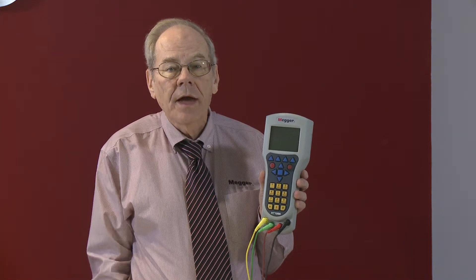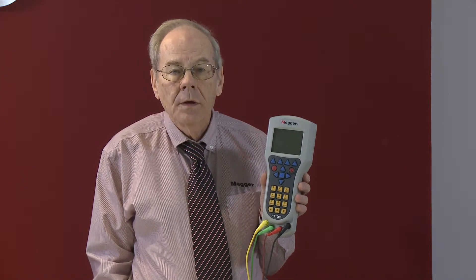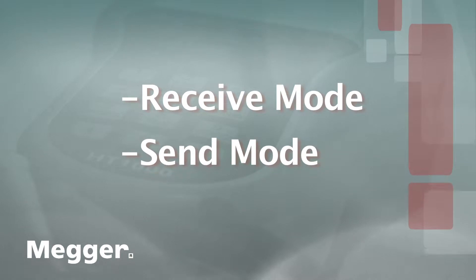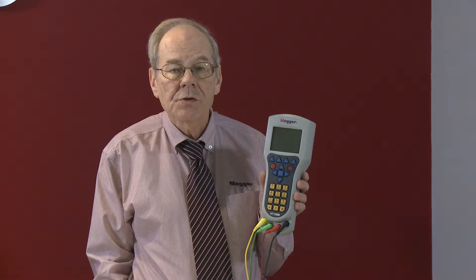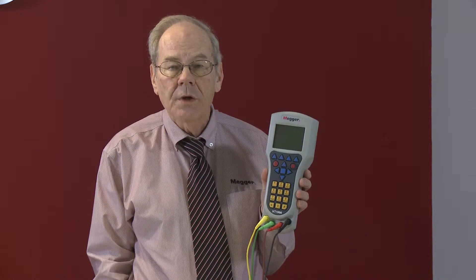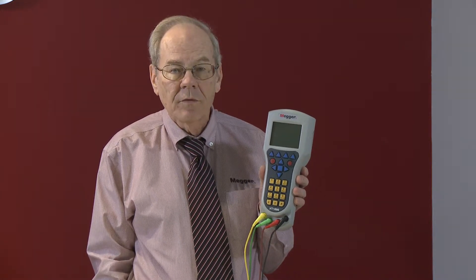These measurements can aid in identifying interrupters that can affect service. The HT1000-2 has both a receive and send mode. To receive and make measurements, a second HT1000-2 or other appropriate signal source must be provided.